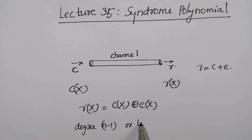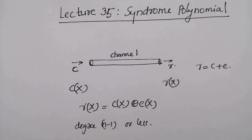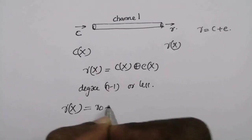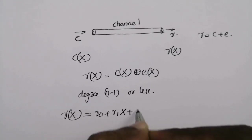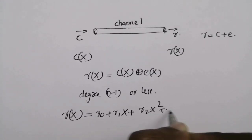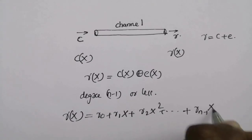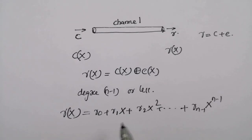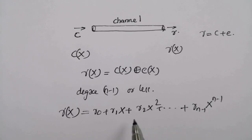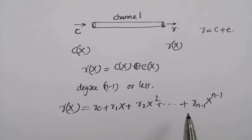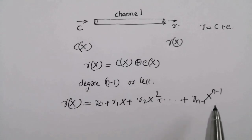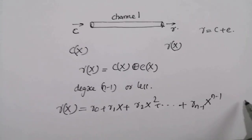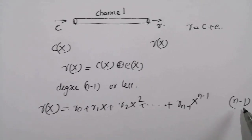We know that r(x) can be written as r₀ plus r₁x plus r₂x² plus etc. plus r_{n-1} x^{n-1}. Based on the coefficients r₁, r₂, etc. through r_{n-1}, the degree of the received polynomial changes, and the maximum degree of the received polynomial will be n minus one.